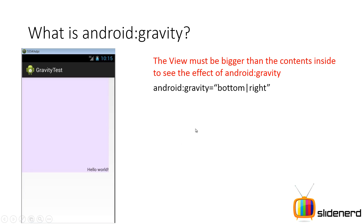You can also have two values together. That is, you can have your 'hello world' at the bottom as well as the right. You can put the pipe symbol between bottom and right and that way both values will work — your 'hello world' will be at the bottom and at the right at the same time. Both values take effect simultaneously.